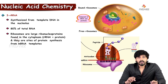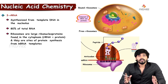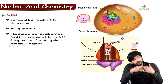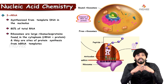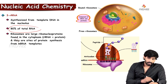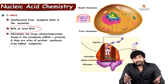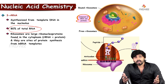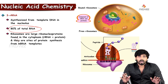Coming to the third one, rRNA — that means ribosomal RNA. It is also synthesized from template DNA, that means a single strand of DNA. rRNA constitutes 80% of total RNA, while tRNA accounts for 15% and mRNA for 5%.